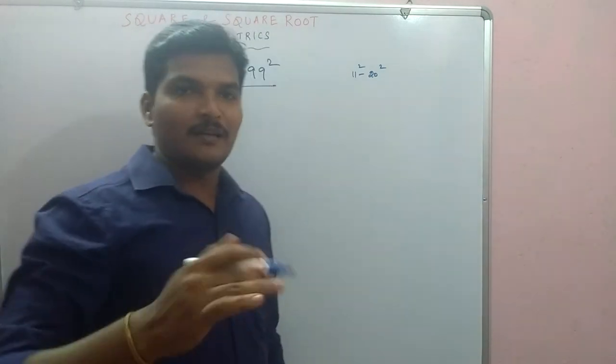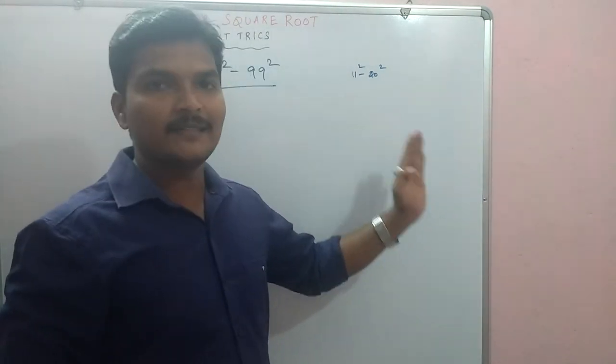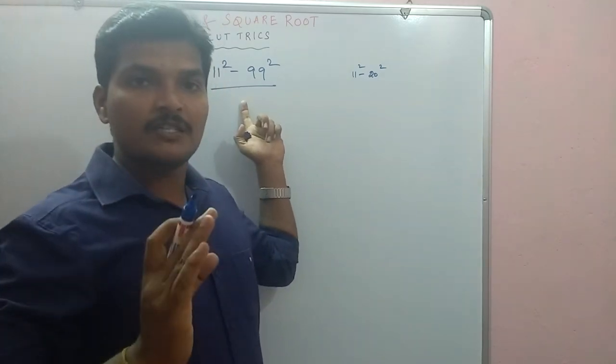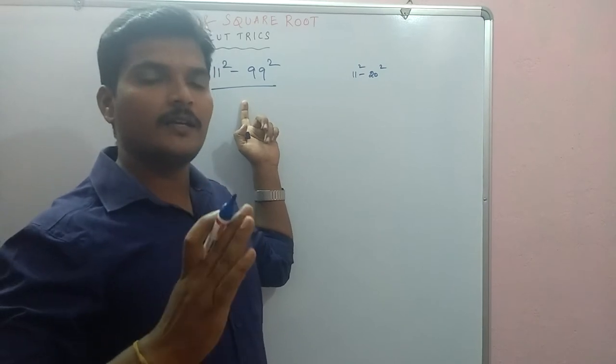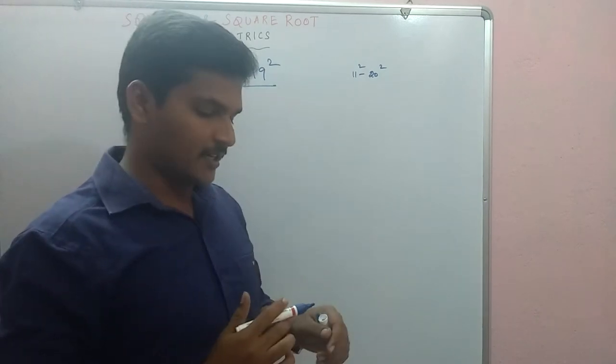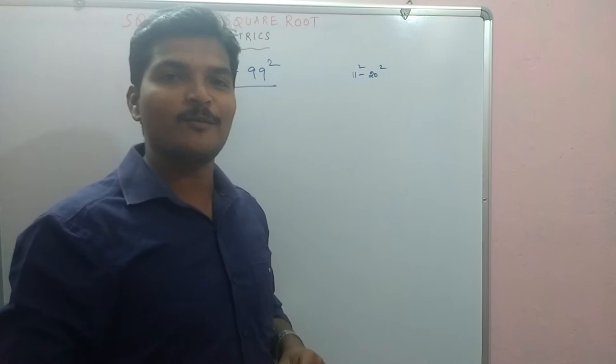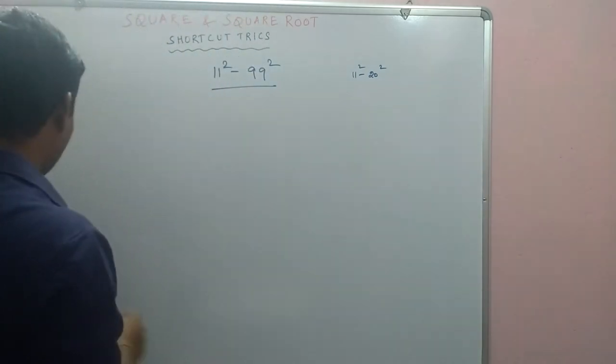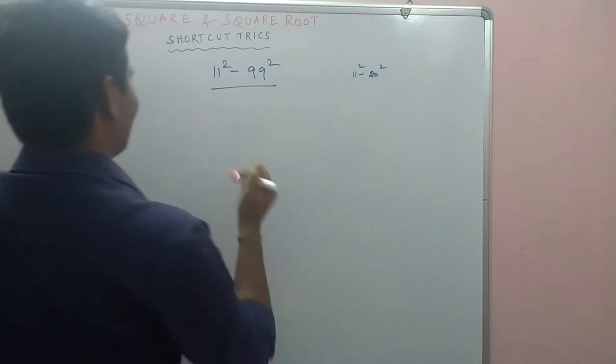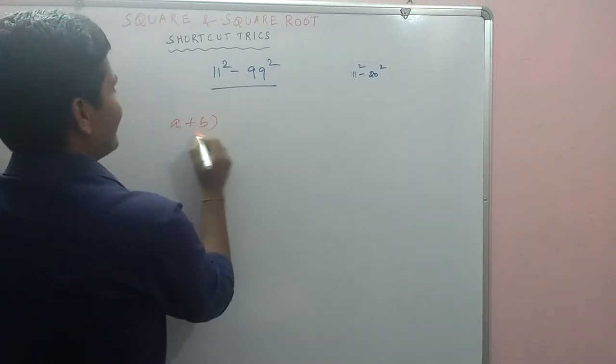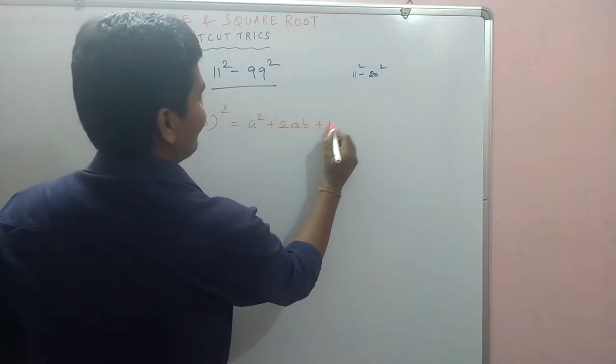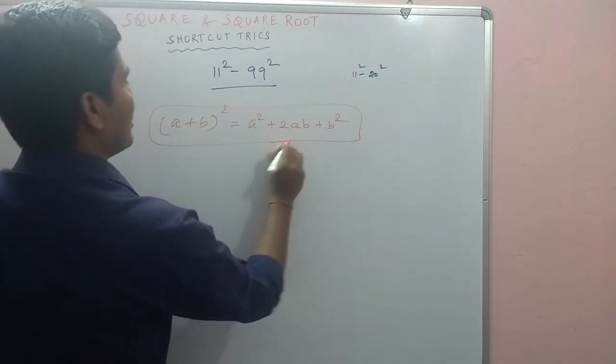If you know the shortcut, you can tell the answer. A plus B whole square. A plus B whole square, that is A square plus 2AB plus B square. This formula we will use for the shortcut.